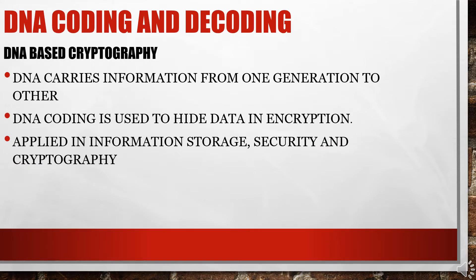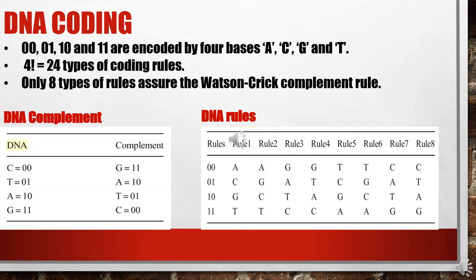Just as DNA carries information from one generation to another, DNA coding is also used to carry and hide information. This is applied in information storage, security, and cryptography. Now we'll see what DNA coding is. We'll be mapping the digital data to the four nucleic acids A, C, G, and T.